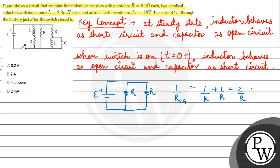that is 2/R. Given resistance is 9, so R equivalent is 9/2 ohm. Current equals EMF upon R equivalent, which is 18 divided by 9/2, that is 4 ampere.